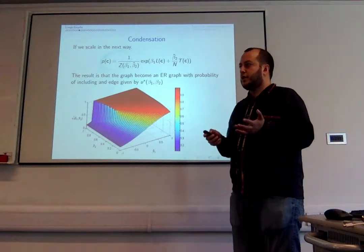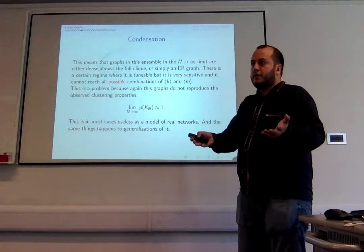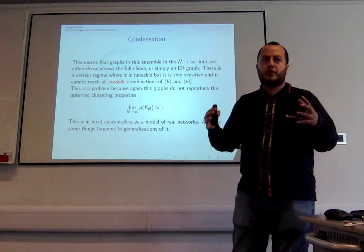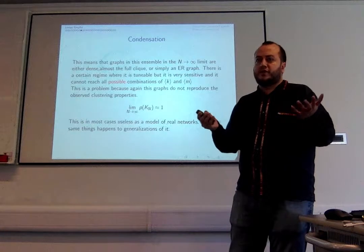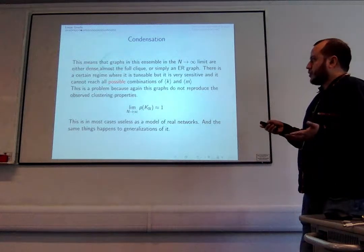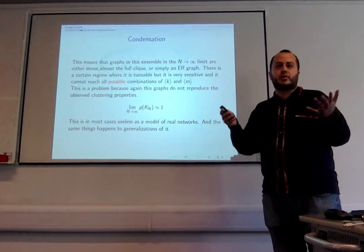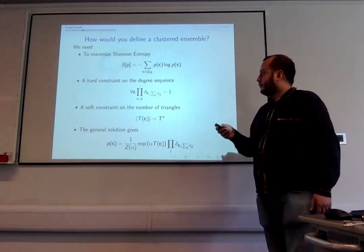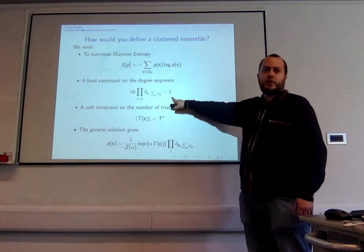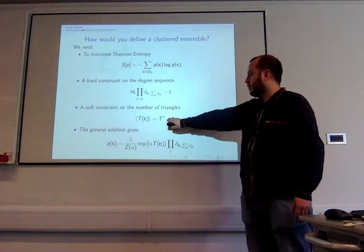If you try to scale it to avoid dense graphs, you lose all the loops again. Either you get the same Erdős–Rényi behavior, or if you try to boost the loops, the fully connected graph gets probability almost one, which is useless as a model for real networks. What's happening is the fully connected state has so many triangles it dominates the measure. So we restart with a maximum entropy approach but now impose a hard degree constraint combined with a soft constraint on the number of triangles.